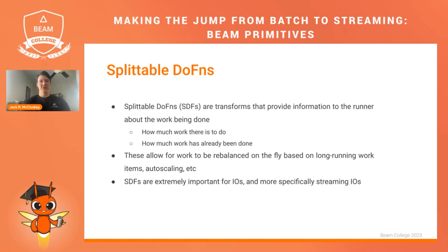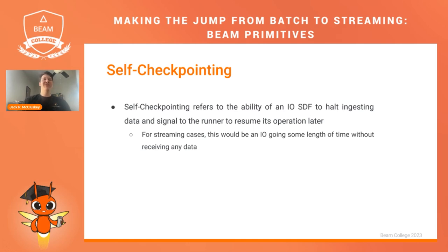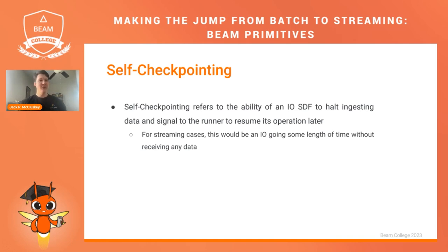SDFs are really important for IOs, and more importantly, streaming IOs, because when you're reading data you want to be able to ingest it into your pipeline quickly. In the case of a streaming transform, you want something that can self-checkpoint. Self-checkpointing refers to the idea of an IO splittable DoFn stopping the ingestion of data and signaling to the runner to resume its operation later — for instance, if an IO hasn't gotten data in a couple minutes. The Go, Java, and Python SDKs all support self-checkpointing DoFns, so this is really just an implementation detail.